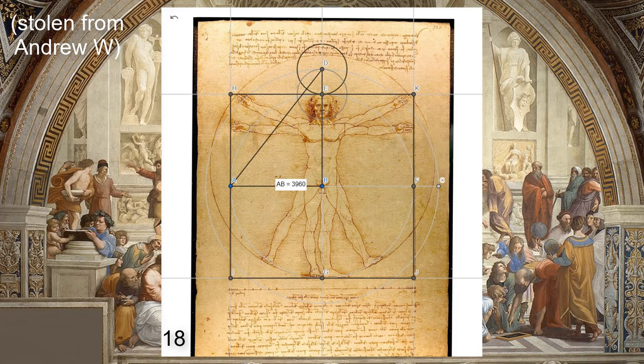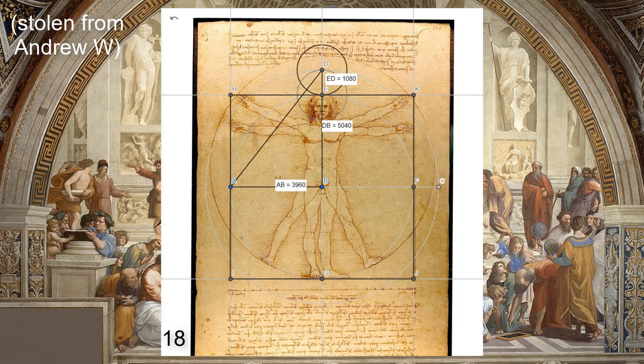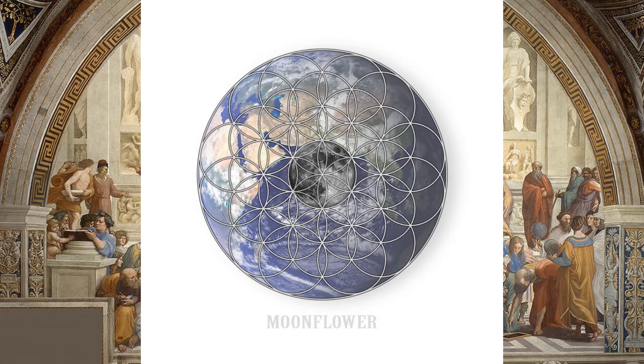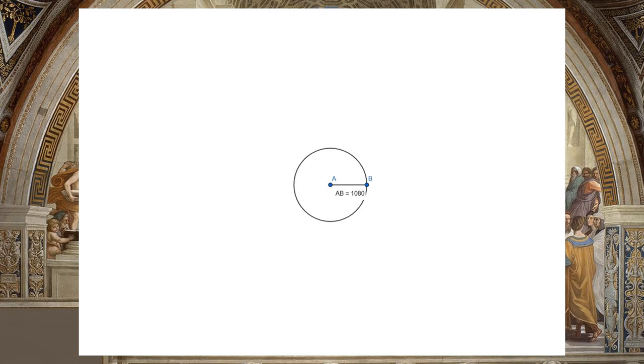280 multiplied by 18 is 5,040, and 5,040 minus 3,960 gives us 1,080 — the average radius of the Moon in miles. It's difficult to prove, but da Vinci likely would have known about this relationship. In his notebook, da Vinci studied the ancient Egyptian Flower of Life pattern, which is well known to contain a close approximation of the 3,960-to-1,080 ratio.